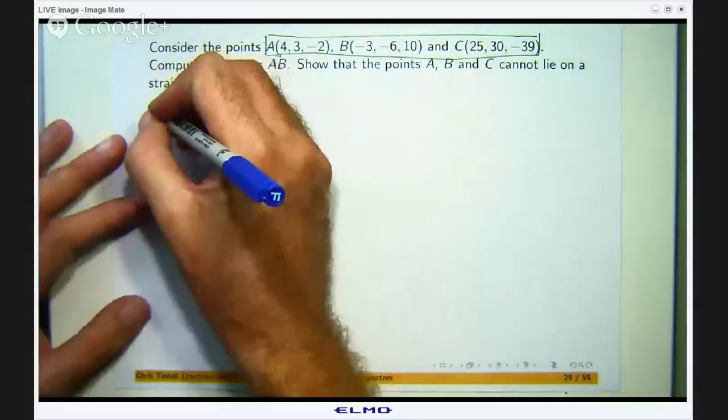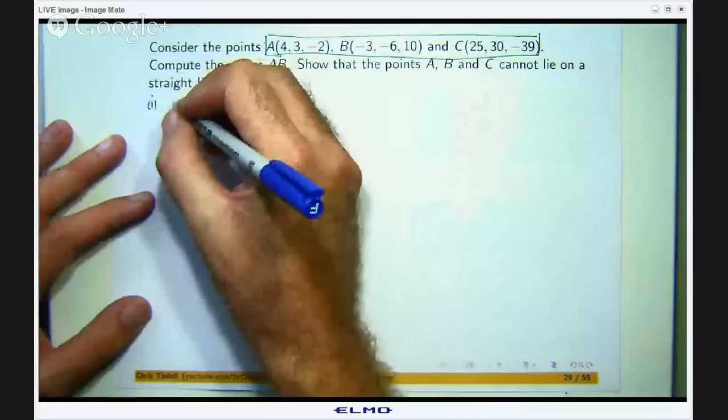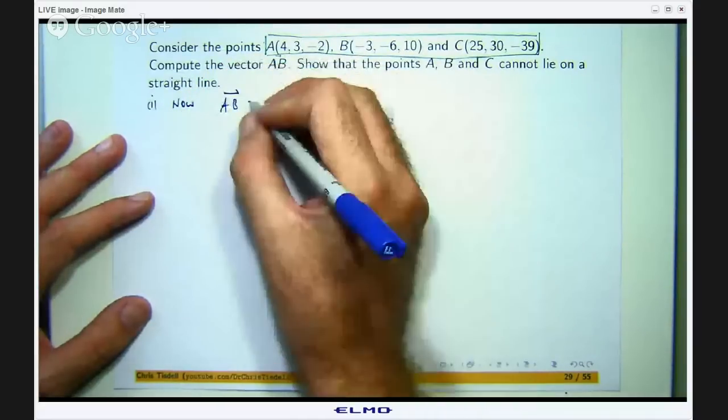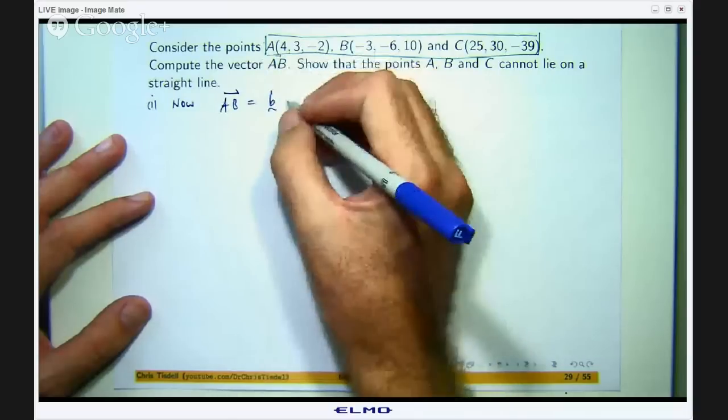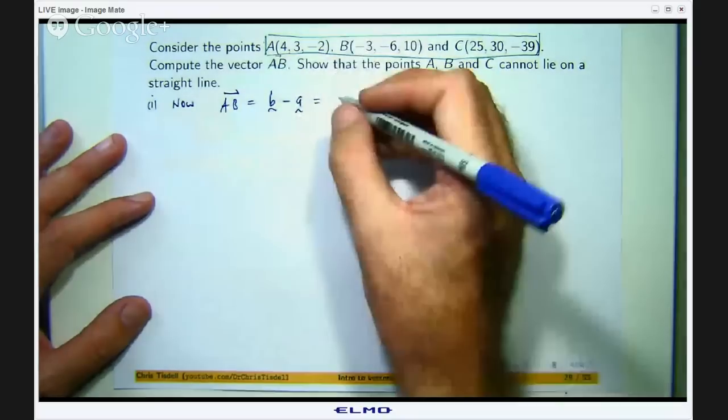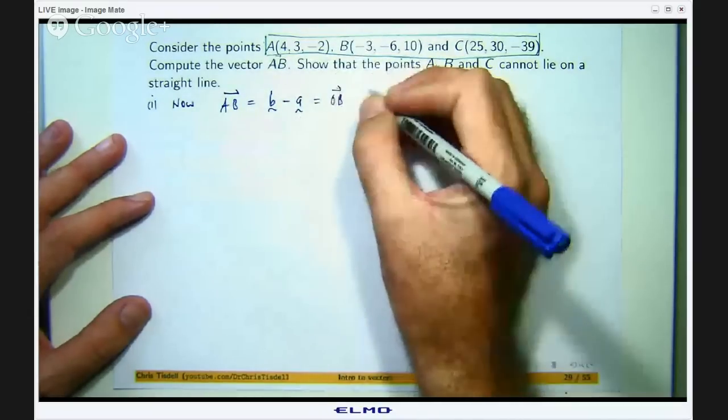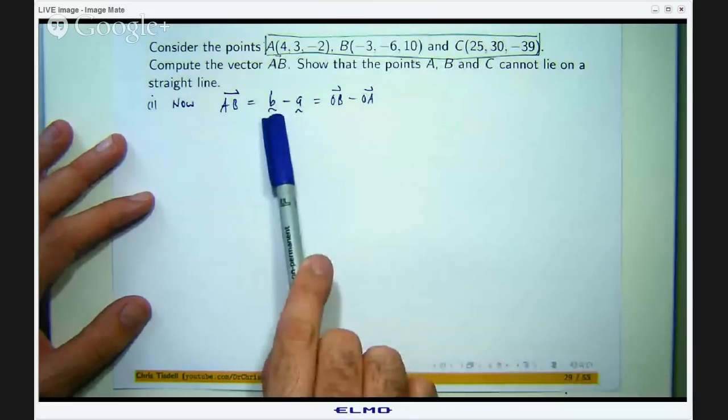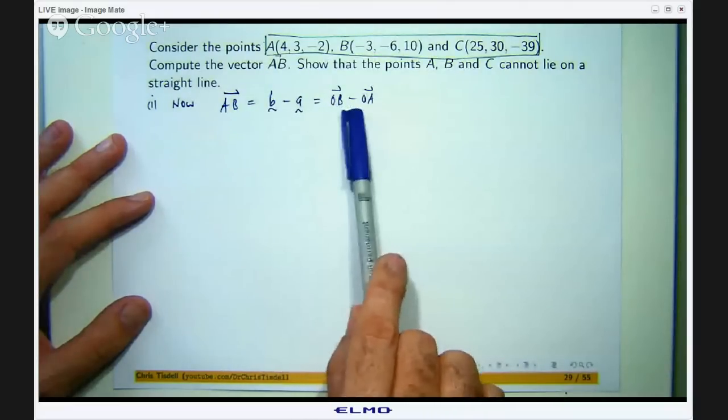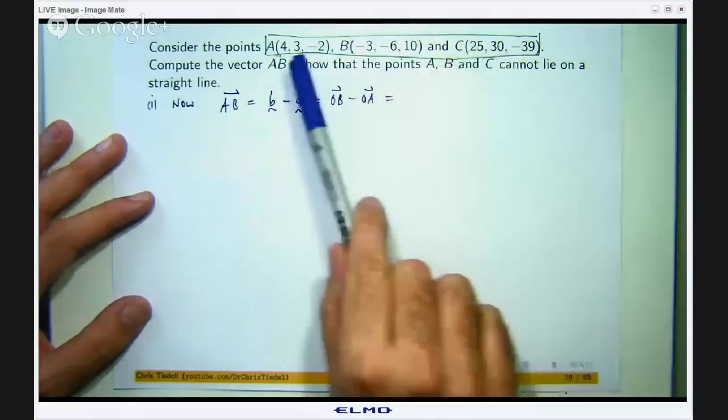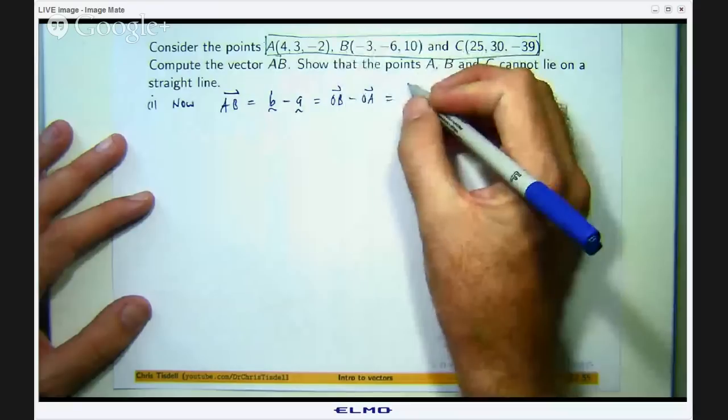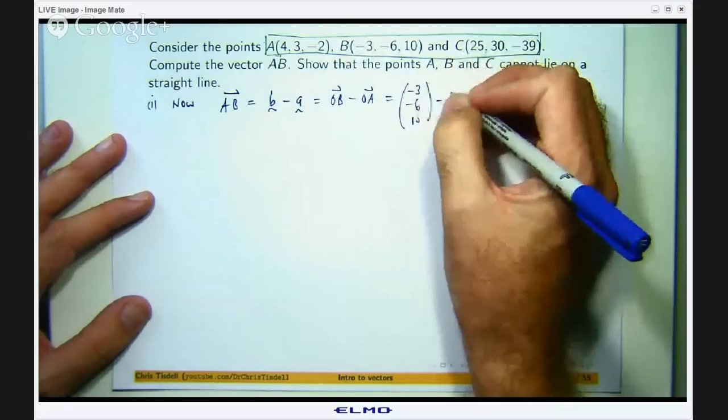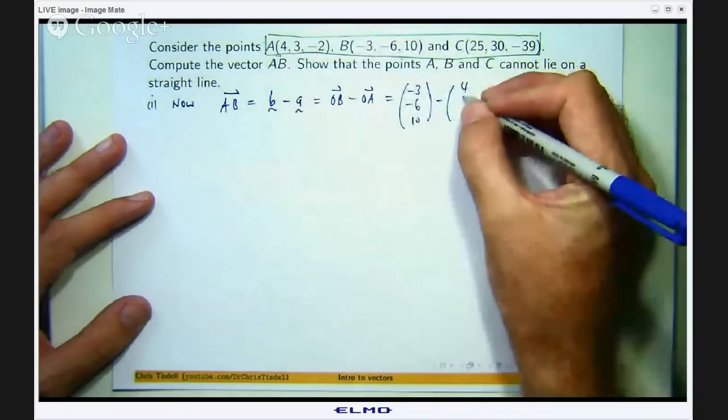Okay, so let us start off with computing the vector from A to B. Now by the triangle rule for addition, the vector from one point to another point just involves taking away the position vectors of the points. So by this lower case b and lower case a I mean the vector OB and the vector OA. So let us write these as column vectors and we can just perform the operation in a component wise fashion.